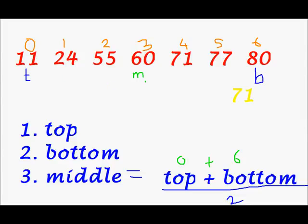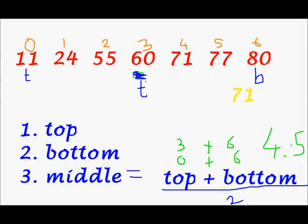Right now my required element 71 is greater than the middle element. I will keep bottom as it is and change the top to the middle element position. I will again calculate the middle: middle = (3 + 6) / 2 = 4.5. Since all values are integers, we disregard 0.5, so our middle element is position 4. We check again — position 4 equals our required element 71, and this is how we found 71 in the array.